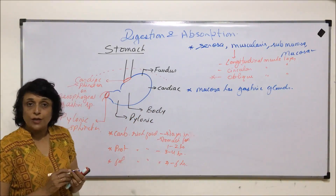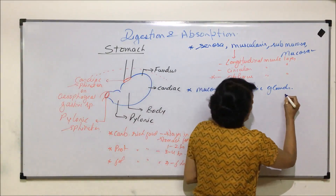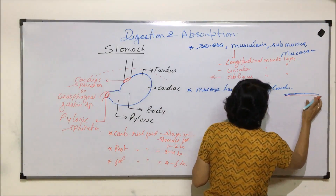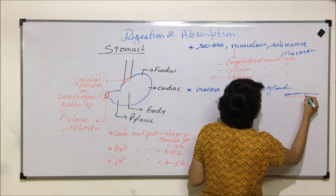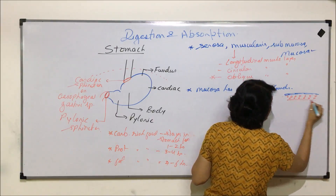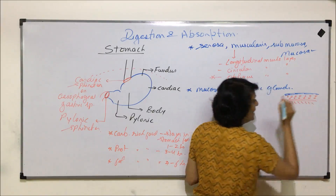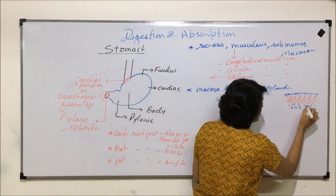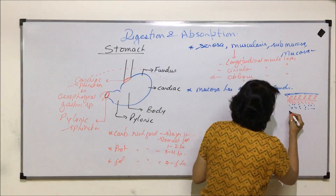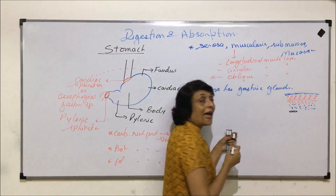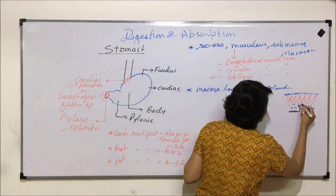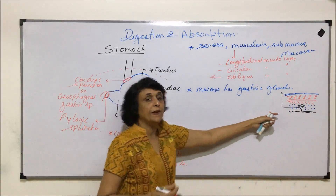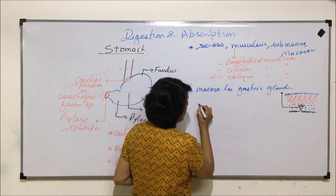Coming to the gastric glands — recalling the histology, the outermost is serosa, then muscularis with longitudinal, circular, and oblique layers, then sub-mucosa, and the innermost is the mucosa layer. The mucosa layer has gastric glands. We will draw one gastric gland structure, drawing it upside down.